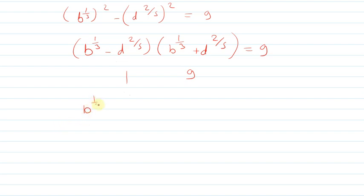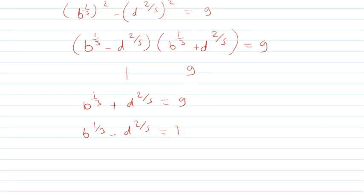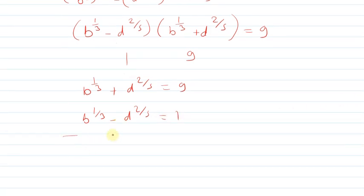So b power 1/3 plus d power 2/5 equals 9, and b power 1/3 minus d power 2/5 equals 1. So I added them both. So 2 times b power 1/3 equals 10, so b power 1/3 equals 5, so b equals 125.